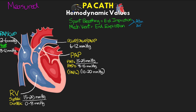From here, assuming we have a catheter capable of doing so, we can also measure cardiac output and then get a cardiac index, which is cardiac output normalized for our patient's body surface area, or basically their size. A normal cardiac output is going to be 4 to 8 liters per minute, while a normal cardiac index is going to be 2.5 to 4 liters per minute per meter squared.